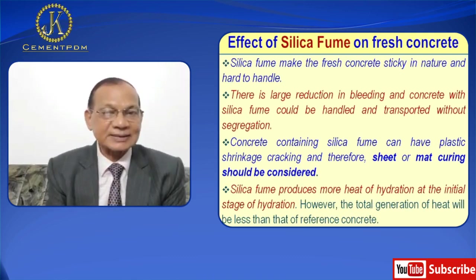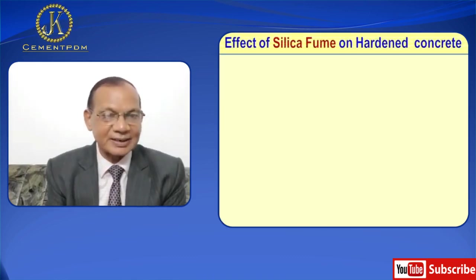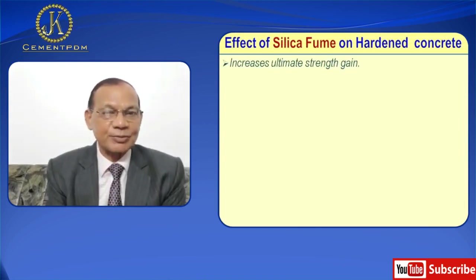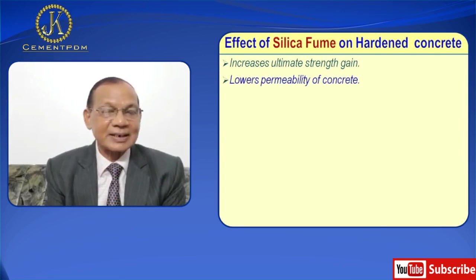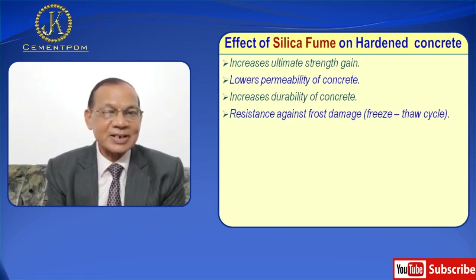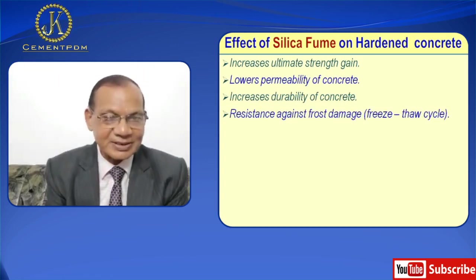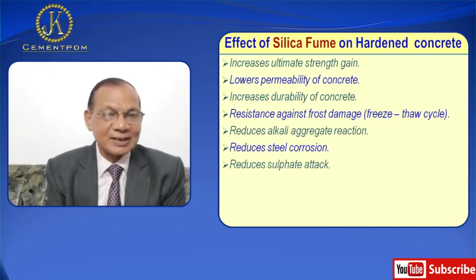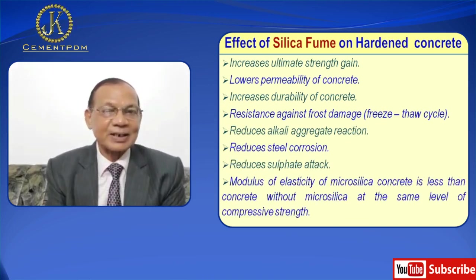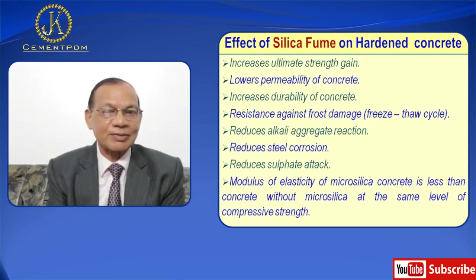Silica fume produces more heat of hydration at the initial stage of hydration; however, the total generation of heat will be less than that of the reference. Effects of silica fume on hardened concrete: it increases ultimate strength gain, lowers porosity of concrete, increases durability of concrete, provides resistance against frost damage with freeze-thaw cycles, reduces alkali-aggregate reaction, reduces steel corrosion, and reduces sulfate attack. Modulus of elasticity of micro silica concrete is less than concrete without micro silica at the same level of compressive strength.